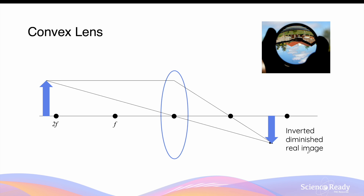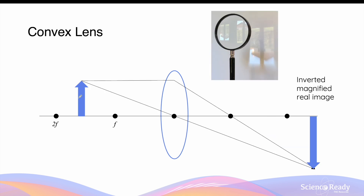For lenses, an image is considered as a real image if it's constructed from the intersection of light rays on the opposite side of where the object is placed. When the object is placed between the focus and two focal lengths away from the lens, we can draw a parallel light ray to the principal axis that will pass through the focus behind the convex lens, and we can again draw a central light ray that passes through the center of the lens without any refraction. The intersection between the two will produce an image on the other side of the convex lens, and this will be again inverted, but this time it will be bigger or magnified, and it will be again a real image.